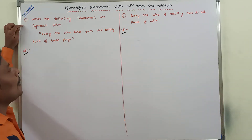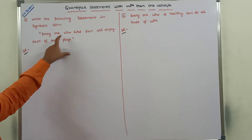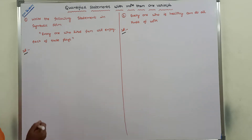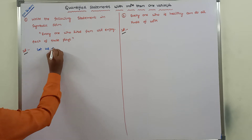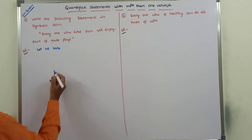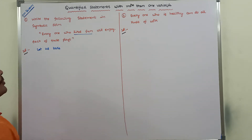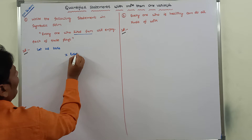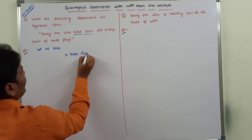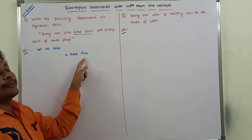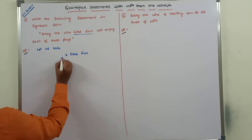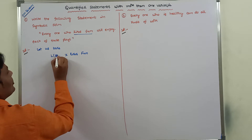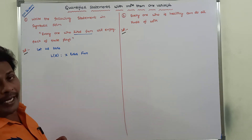First one: write the following statement in symbolic form — 'Everyone who likes fun will enjoy each of these plays.' Here we take 'x likes fun', where x is the subject and 'likes fun' is the predicate. The predicate can be denoted by L and the subject by x, so L(x) denotes 'x likes fun.'